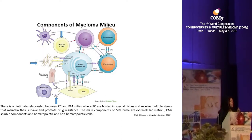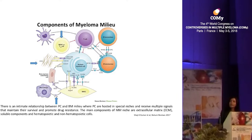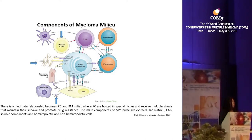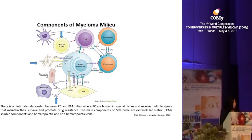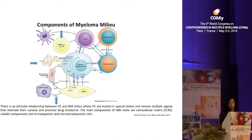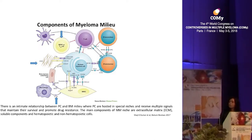As you all know, myeloma is a cancer of the plasma cells. They accumulate in the bone marrow where they proliferate, and we know very well that there is a very close interplay between the plasma cells and the bone marrow microenvironment. This interaction is so important that these cells receive many signals promoting their proliferation and drug resistance. There are three important components of the myeloma niche to consider.